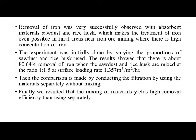Conclusion: Removal of iron was very successfully observed with absorbent materials sawdust and rice husk, making treatment of iron possible even in rural areas near iron ore mining where iron concentration is high. The experiment was done by varying proportions of sawdust and rice husk. Results showed about 80.64% removal of iron when sawdust and rice husk are mixed at ratio 1:1.5 at surface loading rate 1.357 m³/m²/hour. Comparison by conducting filtration using materials separately showed that mixing of materials yields higher removal efficiency than using them separately.